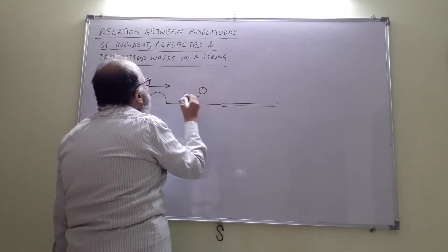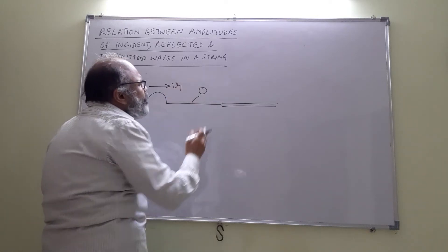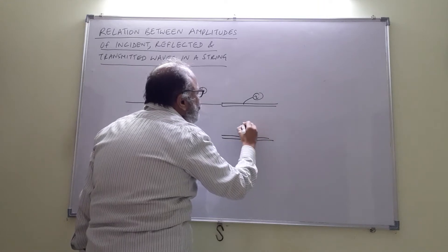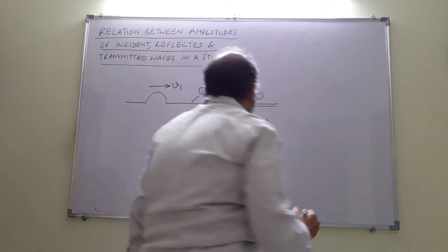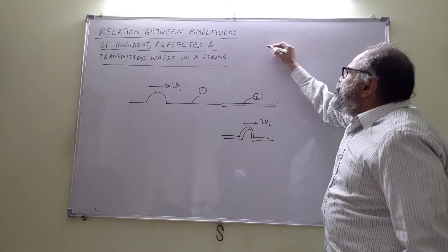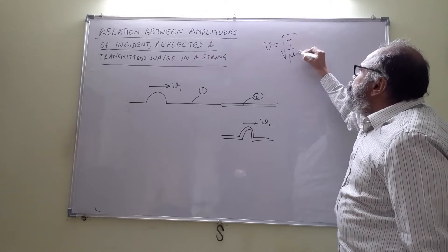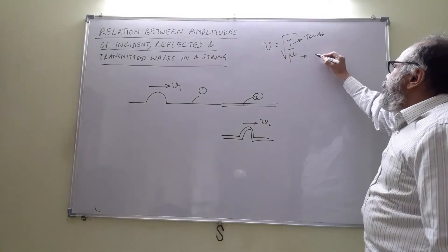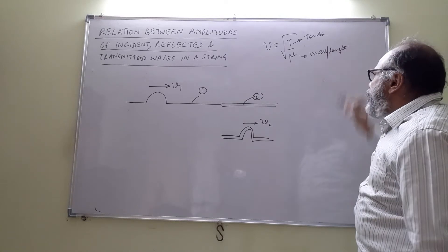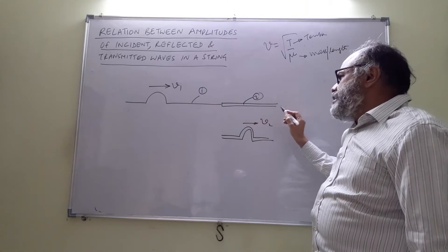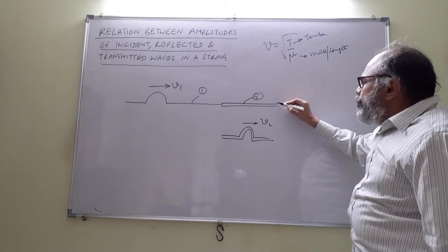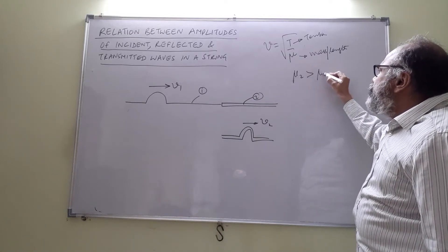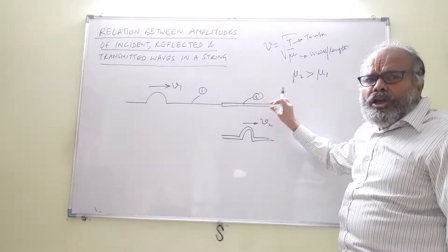We call this string 1, where the speed is v1. The speed of a wave in a string is given by √(T/μ), where T is the tension in the string and μ is the mass per unit length. For two strings joined like this, the tension would be the same. So if the second string is thicker, μ2 is greater than μ1, because the mass per unit length will be more for the thicker string.